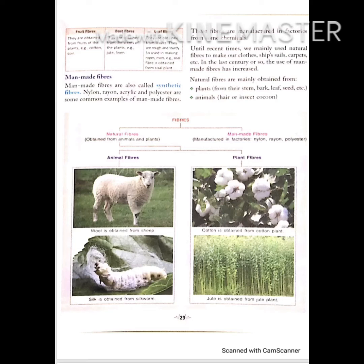Until recent times, we mainly used natural fiber to make our clothes, ship sails, carpets, etc. In the last century, the use of man-made fibers increased. Natural fiber comes from plants — from bark, leaves and seeds — and also from animals, such as hair and insect cocoons.